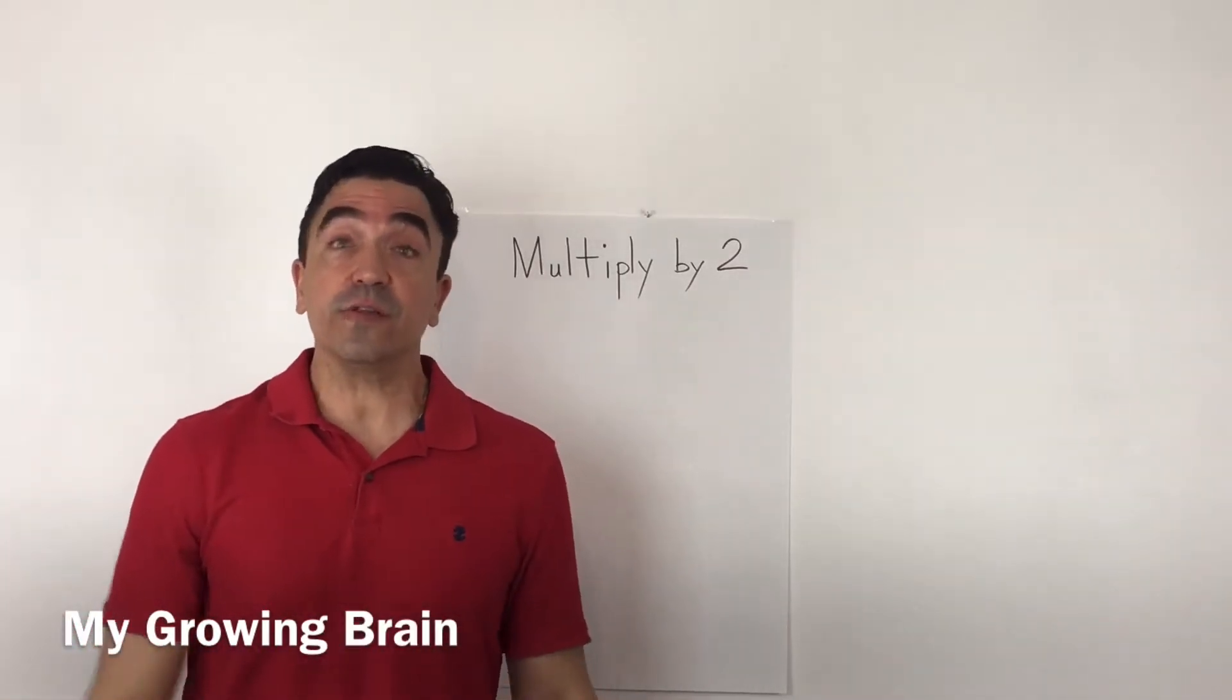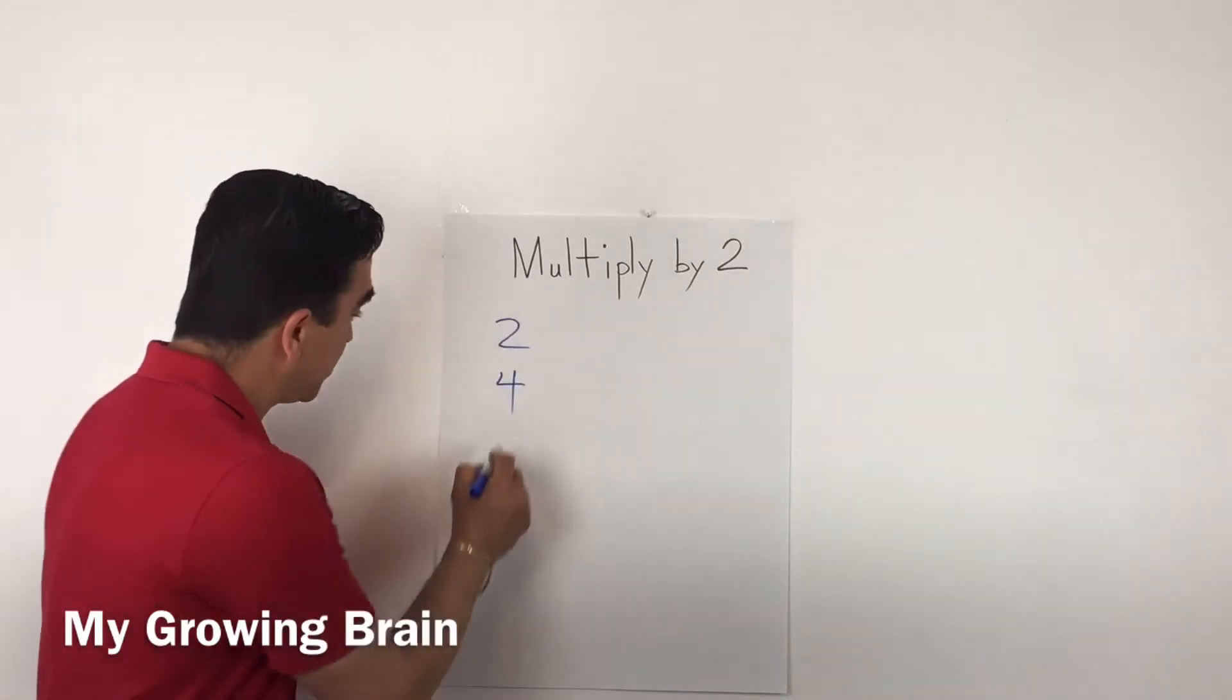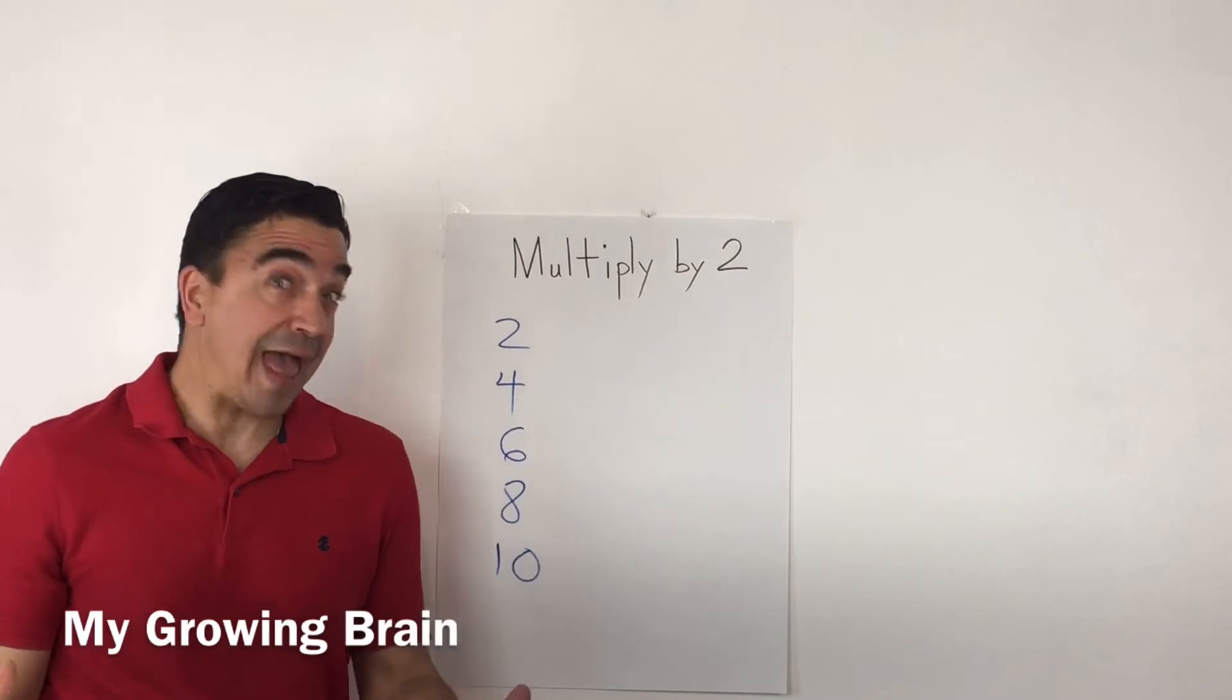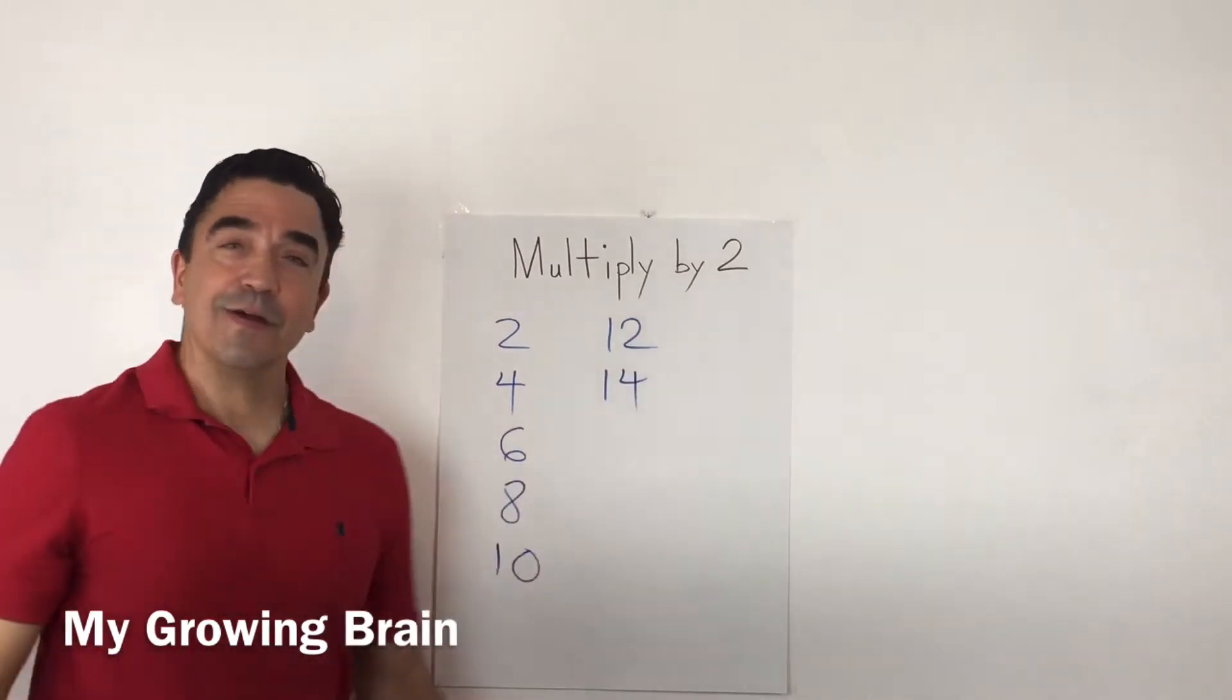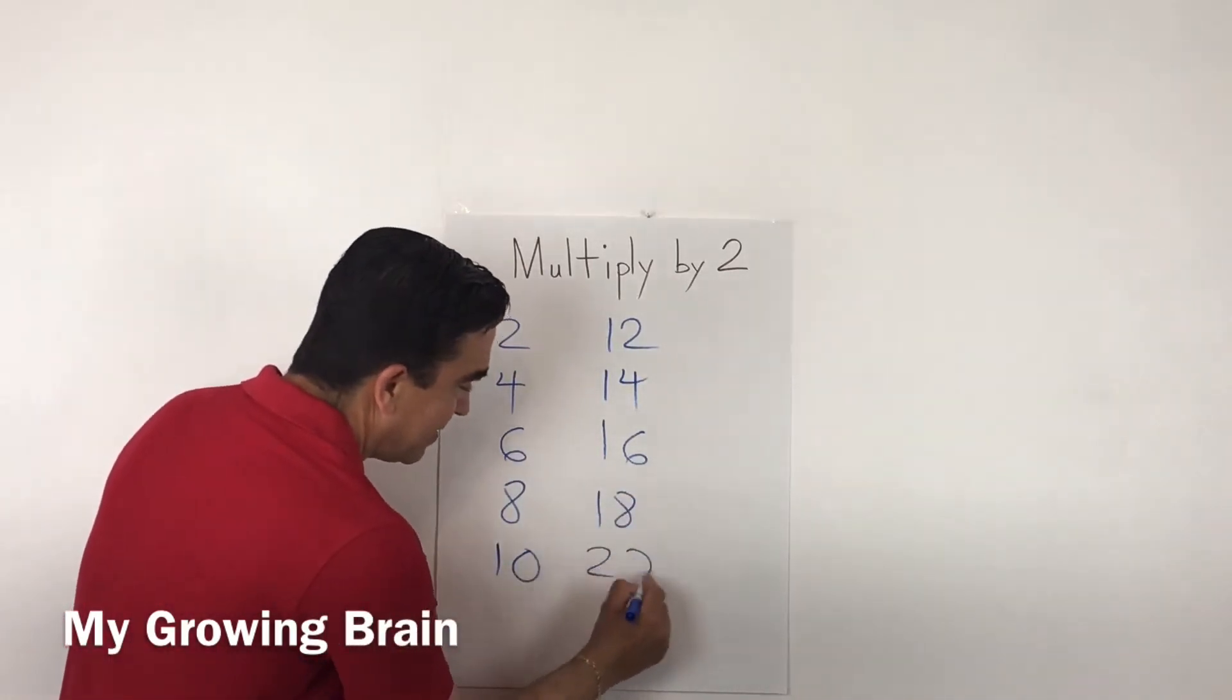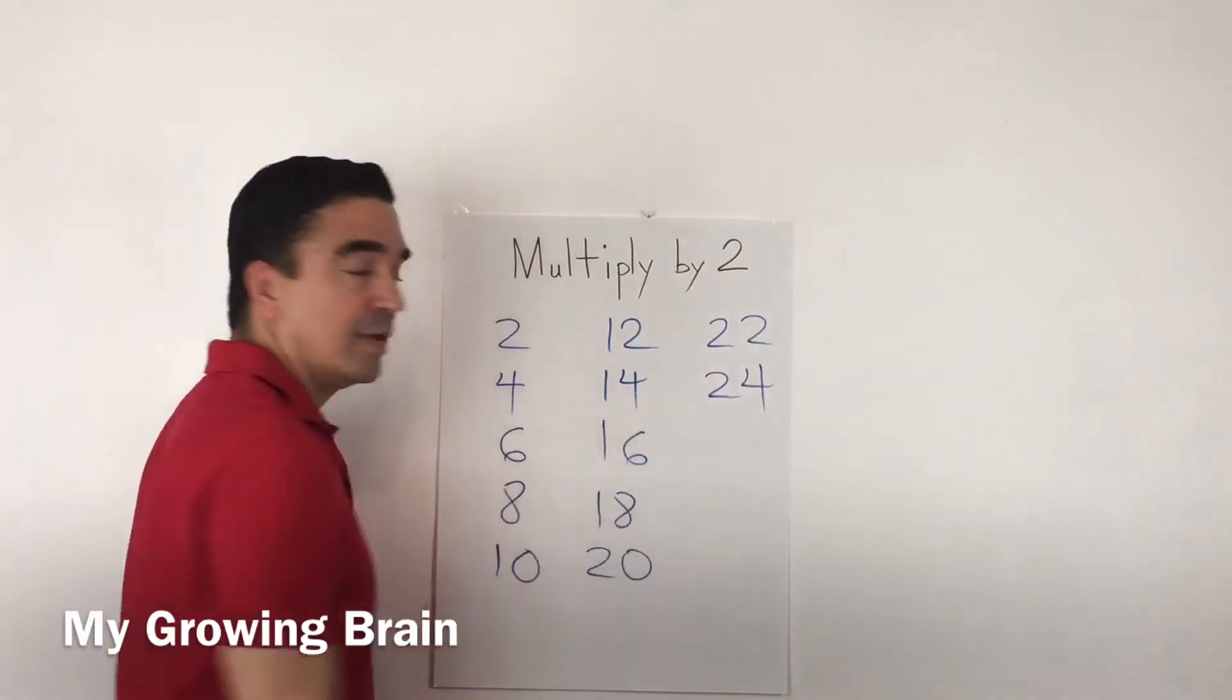Another thing you could do is skip count by 2s. Watch. 2, 4, 6, 8, 10, 12, 14, 16, 18, 20, 22, 24.